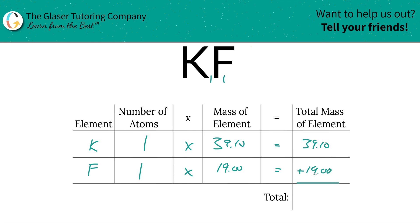And then all we have to do to find the total mass of the compound is simply add this column up. This is now going to work out to be 58.10.